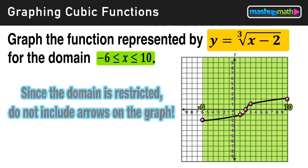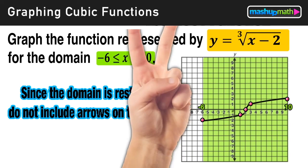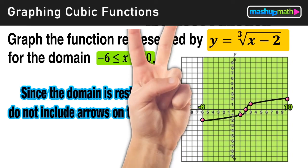Now another thing to look out for here is that since the domain is restricted, we do not include arrows on the endpoints of the graph. So again, we're only concerned with the graph between negative 6 and positive 10. We don't care what it does beyond that domain. And that is how you graph a function involving a cube root over a restricted domain.